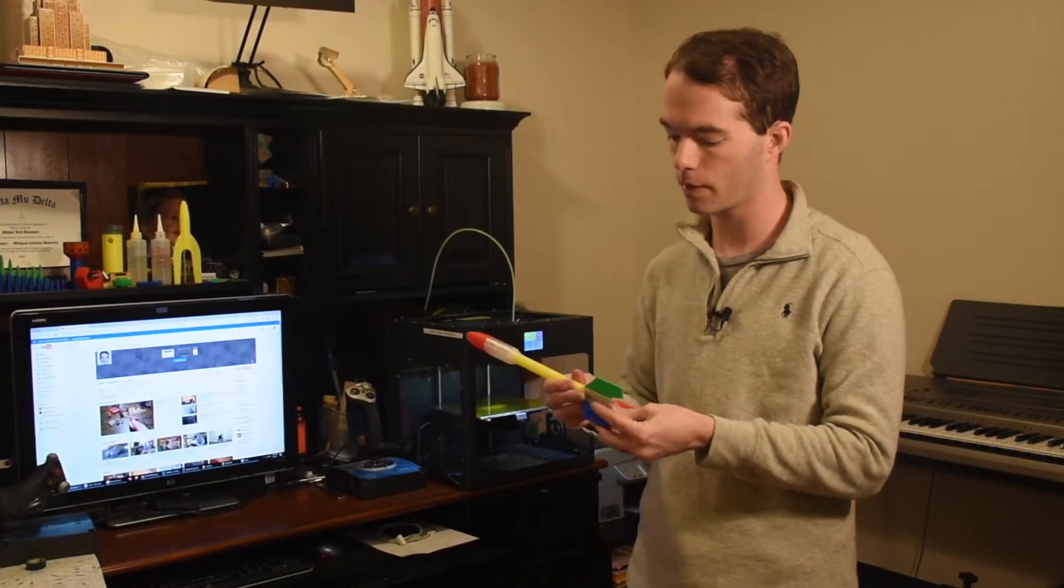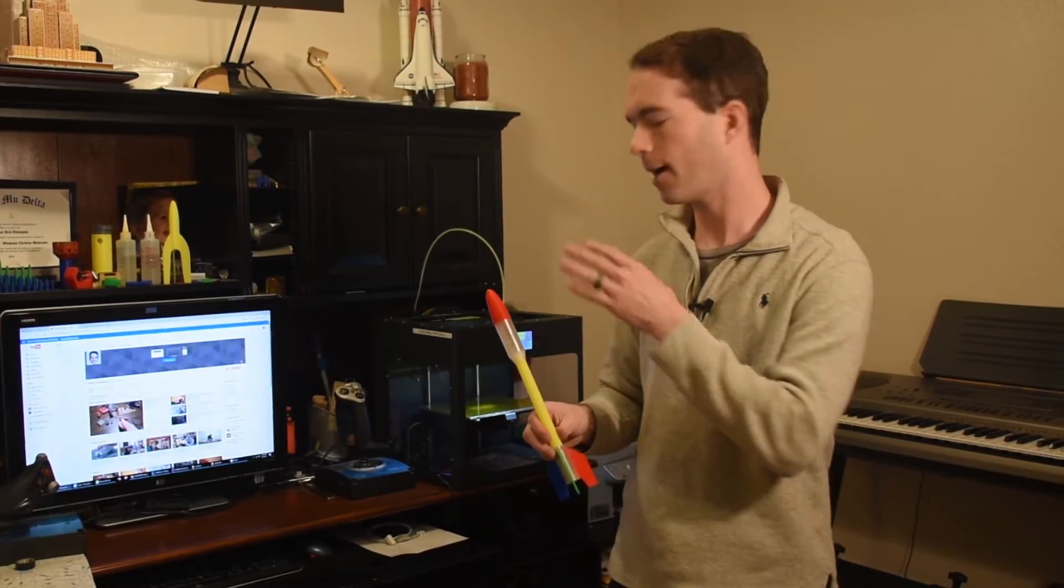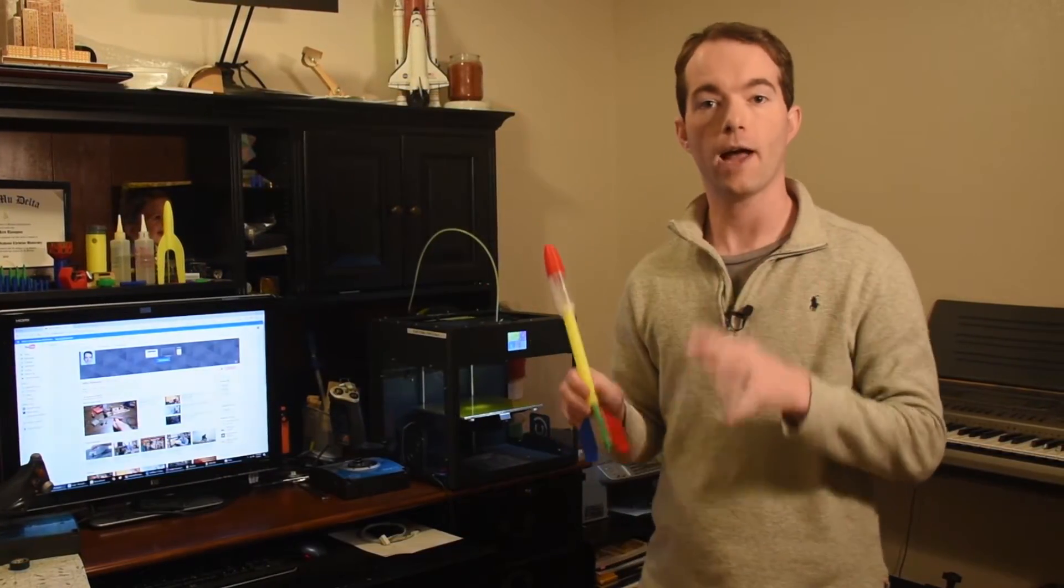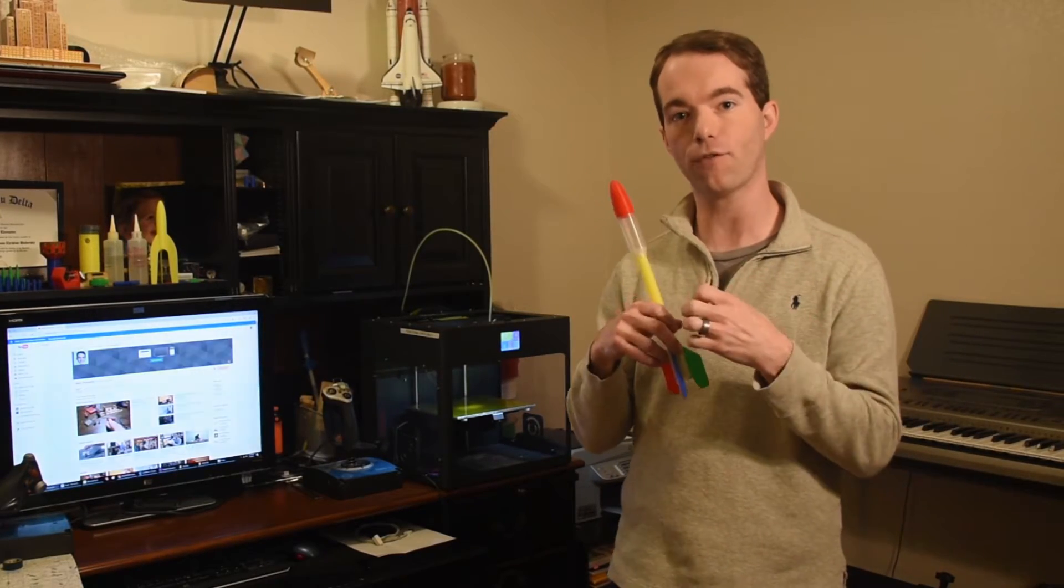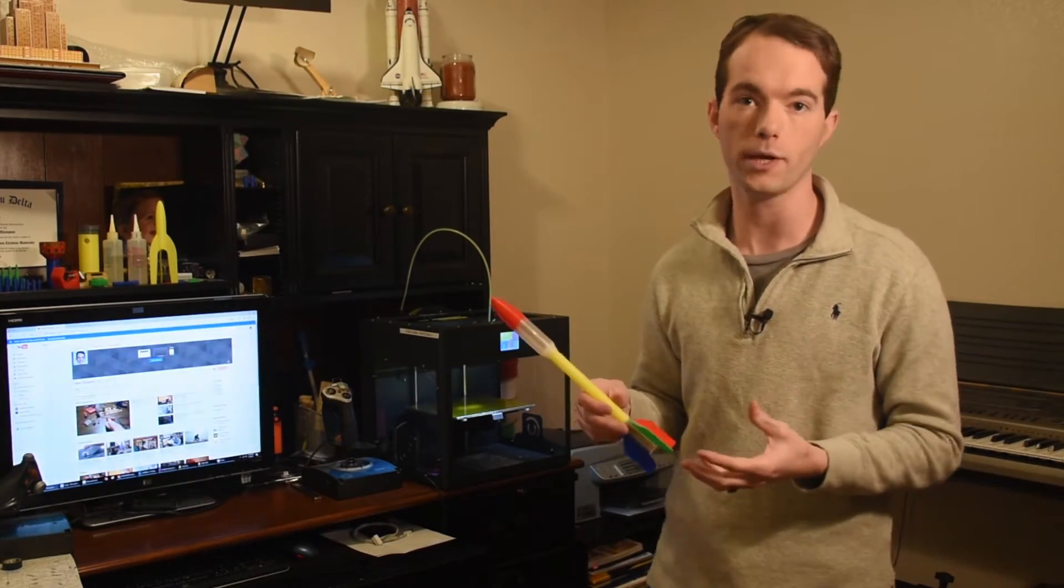And it worked out really well. But any time you need two parts to fit together, I'm always going to add on this CraftBot half a millimeter or 20 thousandths of an inch to get a nice tight fit that still slips on but still can come apart if you need it to.